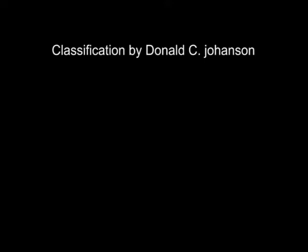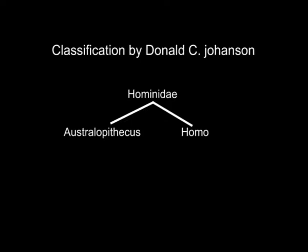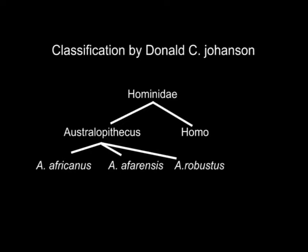The third classification given by Donald C. Johanson divides hominid again into two — Australopithecus and Homo. Australopithecus is divided into three: Australopithecus afarensis, Australopithecus africanus, and Australopithecus robustus.